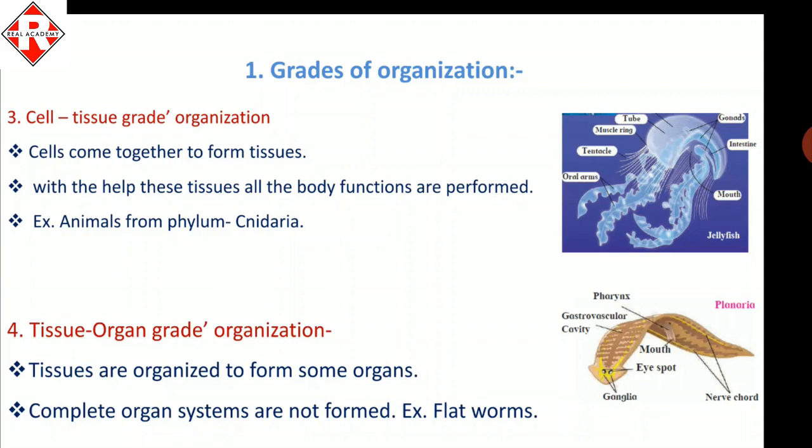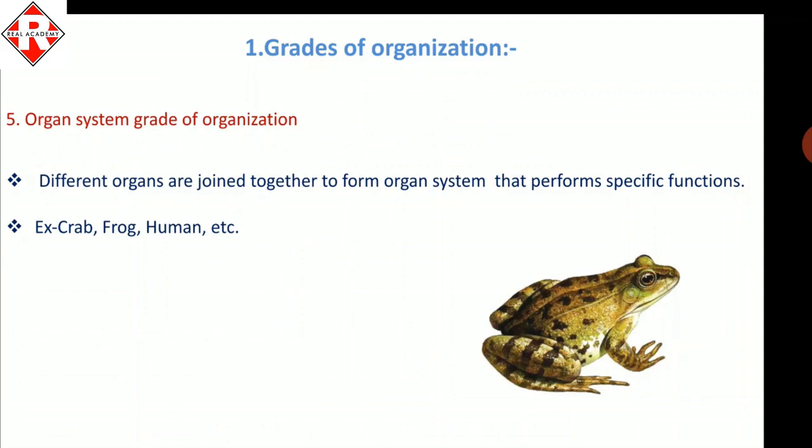The fifth type is organ system grade organization. Here the organism is multicellular; tissues come together to form organs, and many organs come together to form a system — such as in human beings we have the digestive system, circulatory system, nervous system, endocrine system, and so on. Examples include crab, frog, and humans.